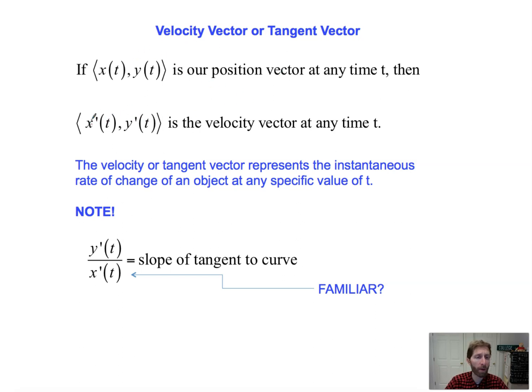x prime of t comma y prime of t with these funky looking braces on the sides, that's the velocity vector. It literally consists of how much you're moving left and right, how much you're moving up and down. I pointed that out before that if the path that we're moving on is something like this, then your velocity vector is essentially going to be like a tangent vector, like a tangent line. That has two components. This would be y prime of t, that's the vertical component. And then this would be x prime of t. Speed would be the magnitude of that, the tangent vector.